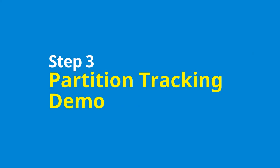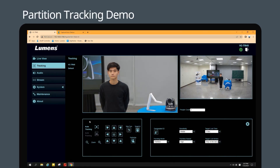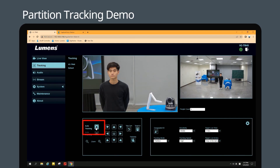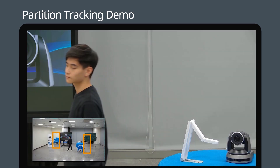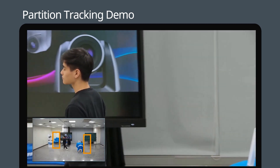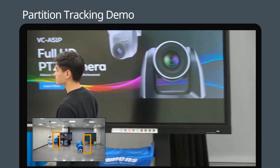Step 3: Let's see partition tracking in action. To start tracking, simply click the Auto Tracking icon on the web interface tracking page. Partition tracking is now activated.